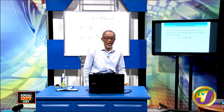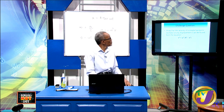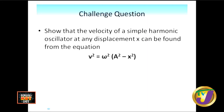Challenge question: Show that the velocity of a simple harmonic oscillator at any displacement x can be found from the equation v² = ω²(A² − x²).